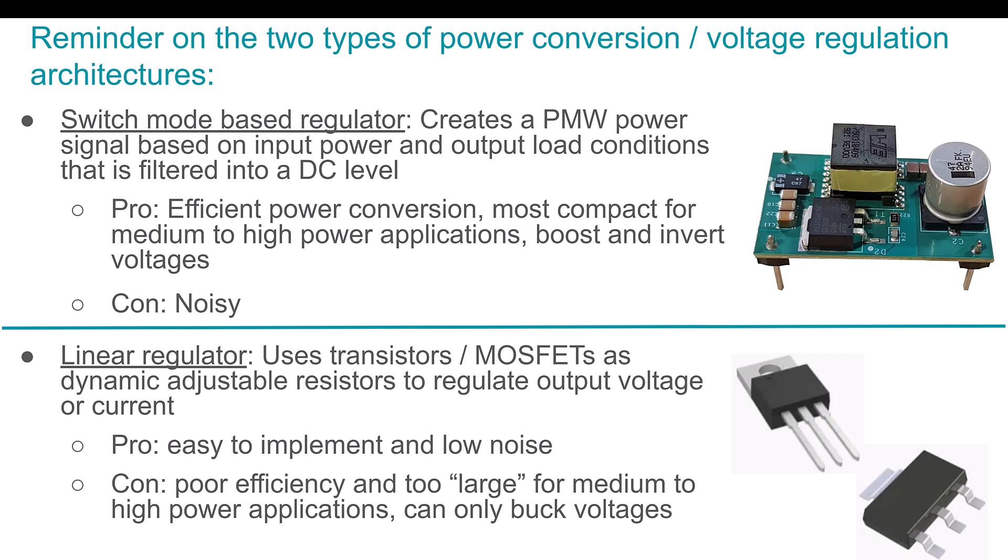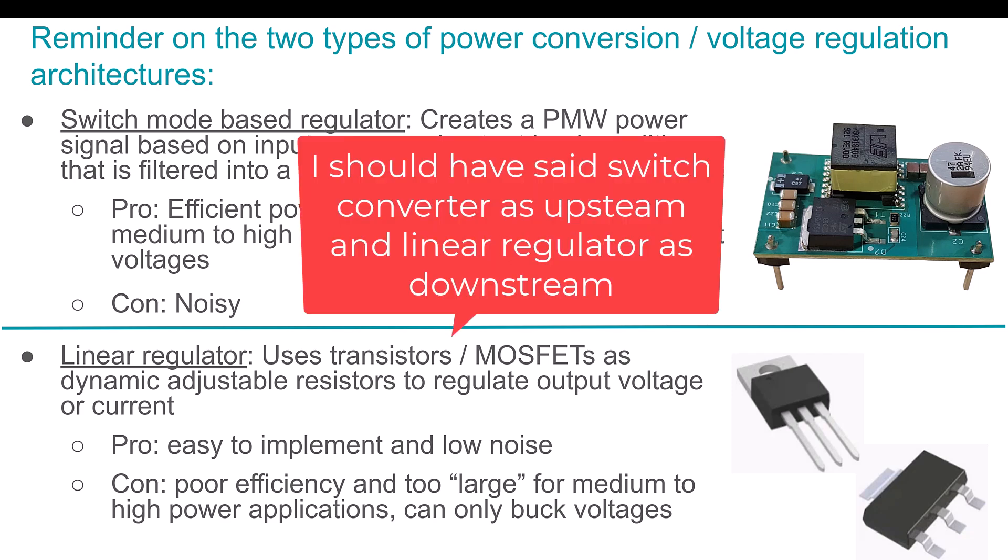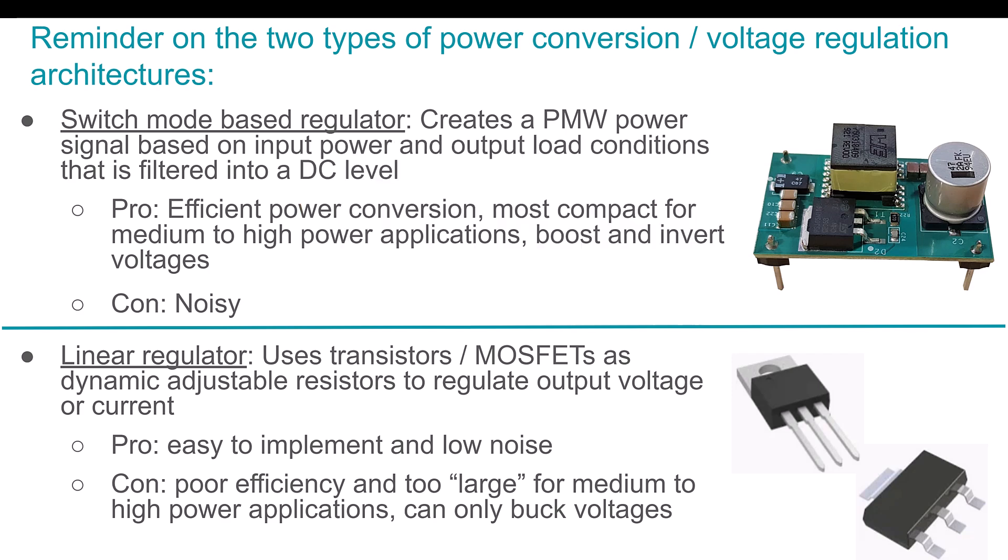So a lot of times designs will have a switch mode regulator, like your cell phone, your Oculus, or your TV as sort of the downstream power conversion device. And it may have multiple DC to DC converters in it. But then when you get to the sensitive circuits or the low power circuits, that's where the linear regulators come in. So often designs have a mix of linear and switch mode based. The reason I wanted to make sure that this is clear is that the switch mode based regulator is creating the noise. And for our sensitive circuits, we can use a linear regulator with a high PSRR spec to help attenuate that noise from our sensitive circuit.